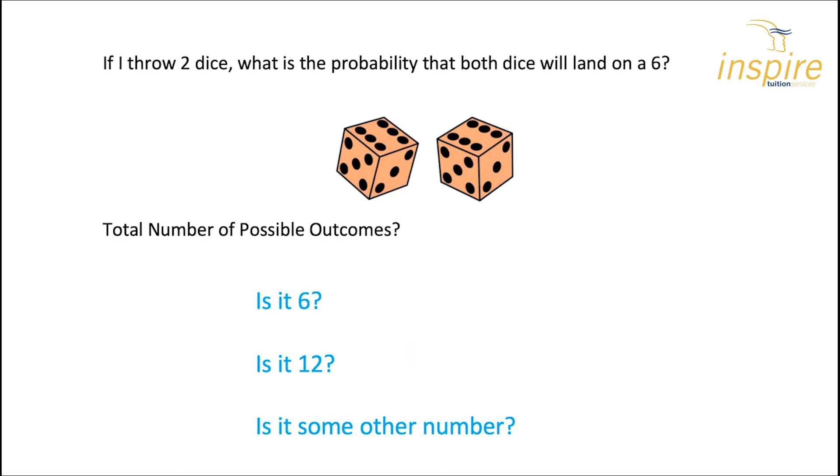So now let's have a look at two dice together. If I throw two dice, what's the probability that both dice will land on a six? So that's me throwing the dice out of my hand if I'm playing a game and seeing that they both land with six and six or a double six. What do you think about the number of possible outcomes here? Do you think it's six as it was with a single die? Or do you think we just have twelve because we've got two dice, it'll be doubled? Or do you think it's some other number?